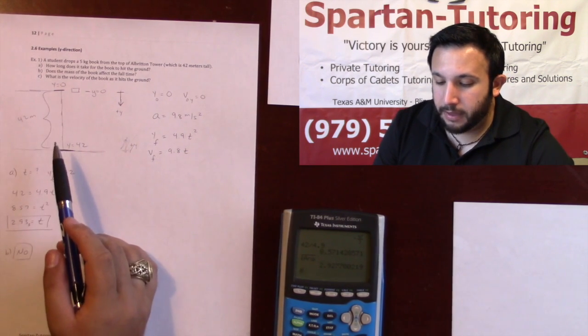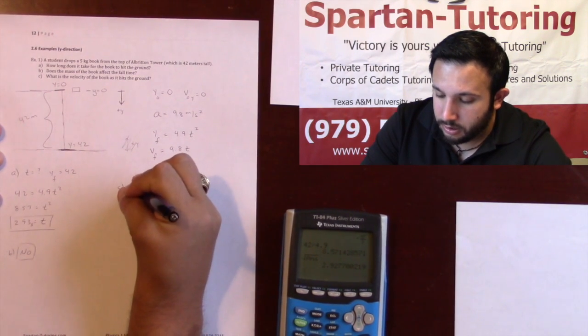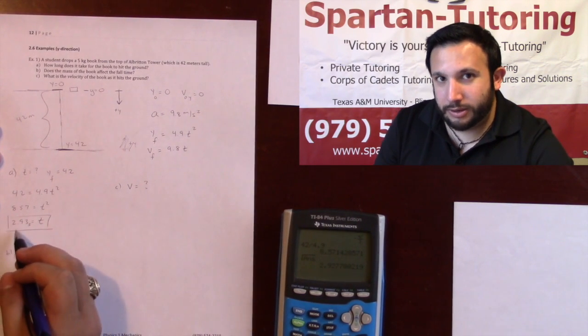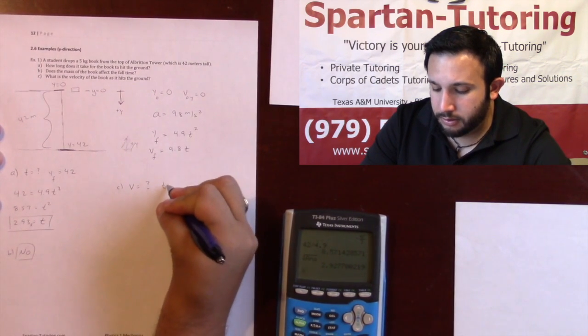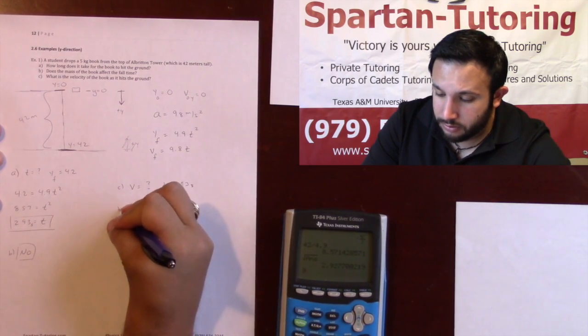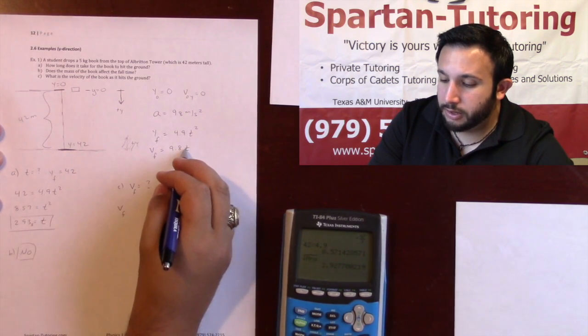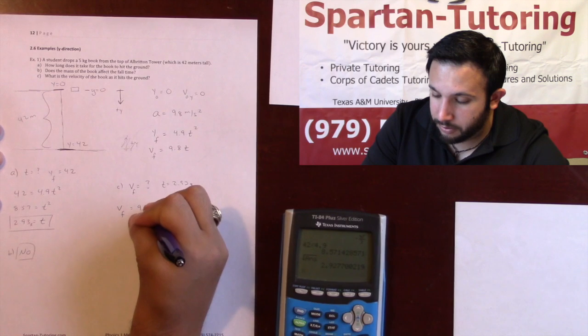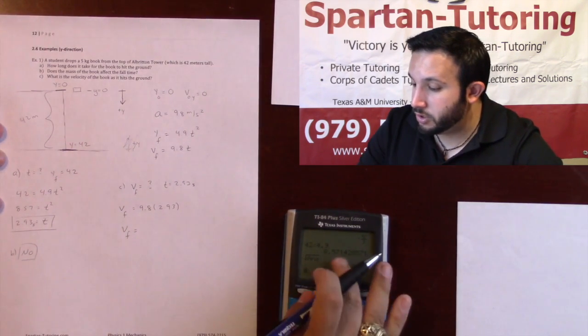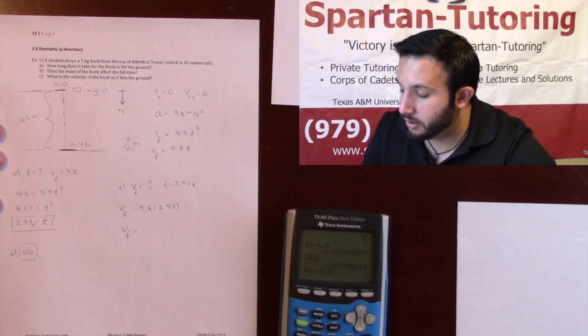Finally, for part c, what is the velocity of the book as it hits the ground? When does it hit the ground? Well, 2.93 seconds later, right? So all we got to do is plug 2.93 into our velocity equation. This is 9.8 times 2.93. Taking what we just found here and multiplying that by 9.8, what we get is 28.69 meters per second.